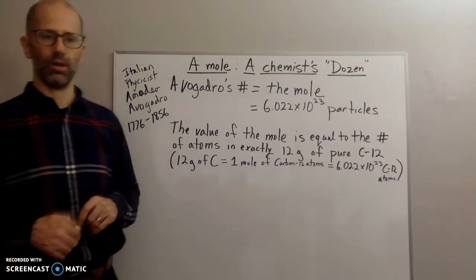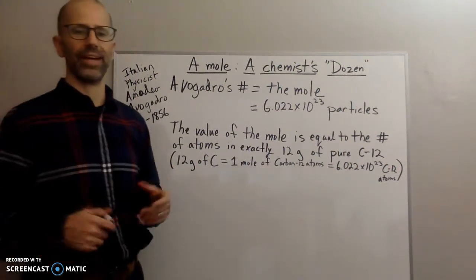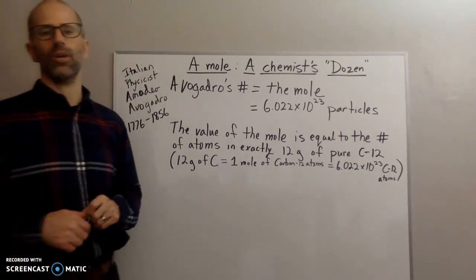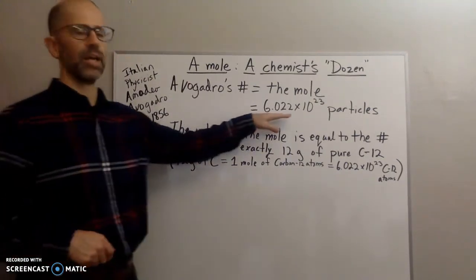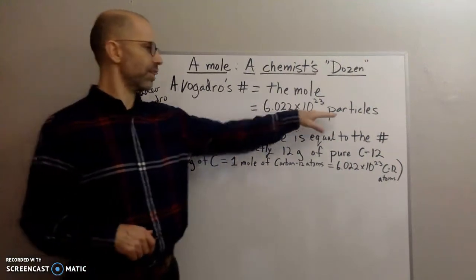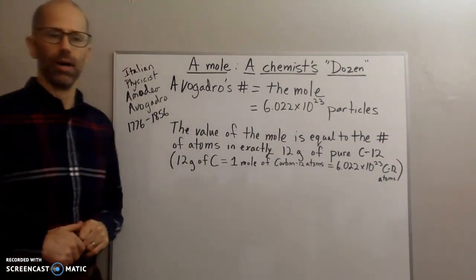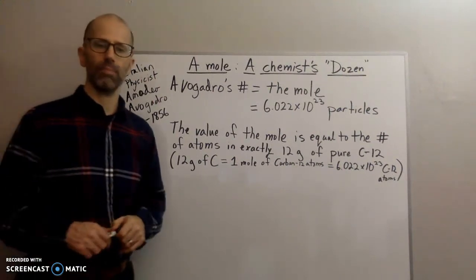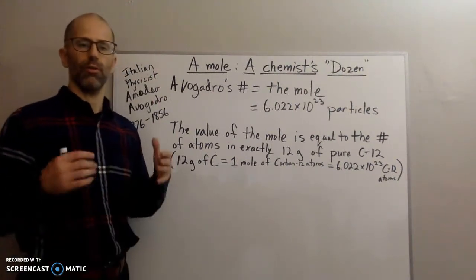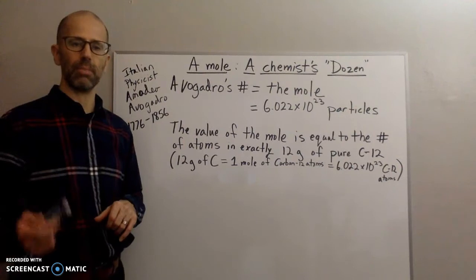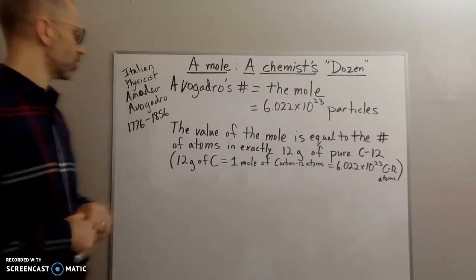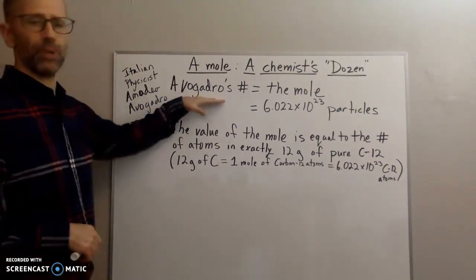The mole can be referred to any type of items. I can talk about a mole of people, a mole of eggs, a mole of cars. So every time I am using the mole I'm referring to this number of that item. In chemistry, we're referring mostly to really small things like atoms and molecules.